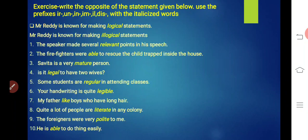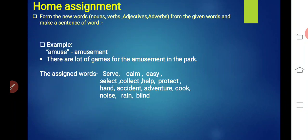Very good students. After doing this exercise, we have gained knowledge of prefixes. These prefixes help us a lot in making opposite words. So I hope you have understood this. Next is the home assignment. You have to note down all the words and try to do the exercise. First word is amuse. We are making amusement from amuse. Amuse is a verb, we are making it a noun - amusement. There are lots of games for the amusement in the park. We have used it in a sentence. So these are the assigned words. Please note down these words in your notebook and try to make sentences of each word.